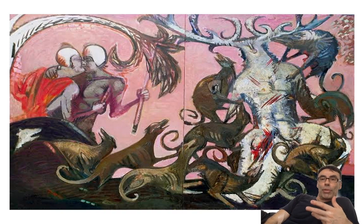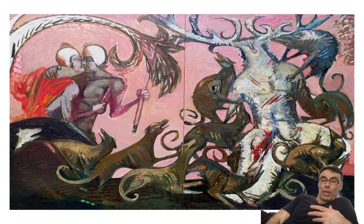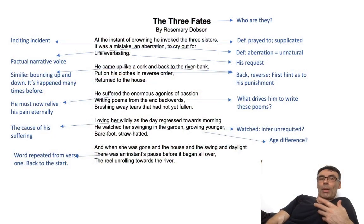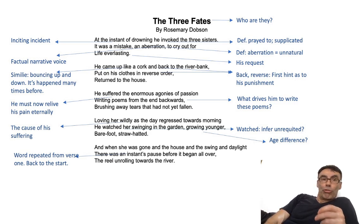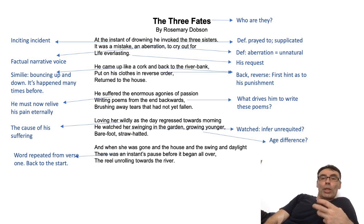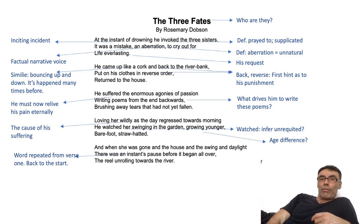So once we understand the characters referenced in the title, it's easy to predict how the protagonist's invocation at the start of this poem is going to work out. This is one of those great circular poems — a bit like Pink Floyd's 'The Wall,' where the album ends 'isn't this where?' and then begins 'we came in.' At the moment of drowning, he invoked the three sisters. 'Invoked' means to call out in prayer or supplication, and we're told what he calls out for: life everlasting. We know what the sisters' attitude is to those who try to avoid their fate, and so it's no surprise to learn it was a mistake.